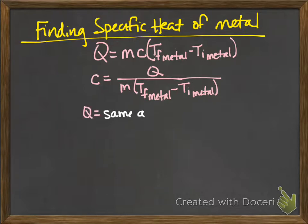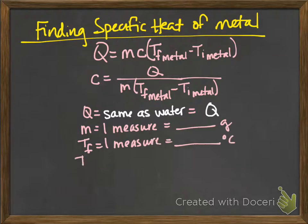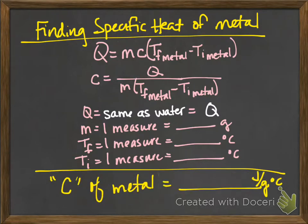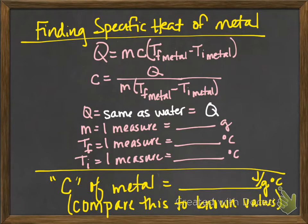Now, the Q is going to come from the water, because the amount of heat that the water gained is how much heat the metal lost. And so technically that Q should have a negative sign on it. So even though I said it's the same as water, you should make it negative Q. And then the mass of the metal you'll have to measure, the final temperature you'll have to measure, and the initial temperature you'll have to measure. But once you have all that data, you can then calculate the specific heat of the metal. And once you have that specific heat, you can compare it to known values, and then you can determine what type of metal it was in your sample.